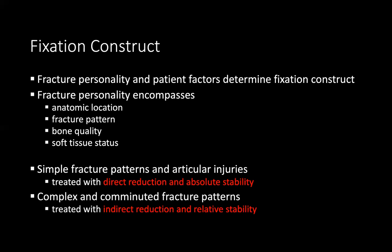Simple and complex or comminuted fractures are treated differently. Simple fracture patterns are usually treated with direct reduction and definitive or absolute stability. Complex or comminuted fractures are usually treated with indirect reduction and relative stability — you get it as close to anatomical reduction as you can and rely on the body to create bridging between the two portions of the fracture.